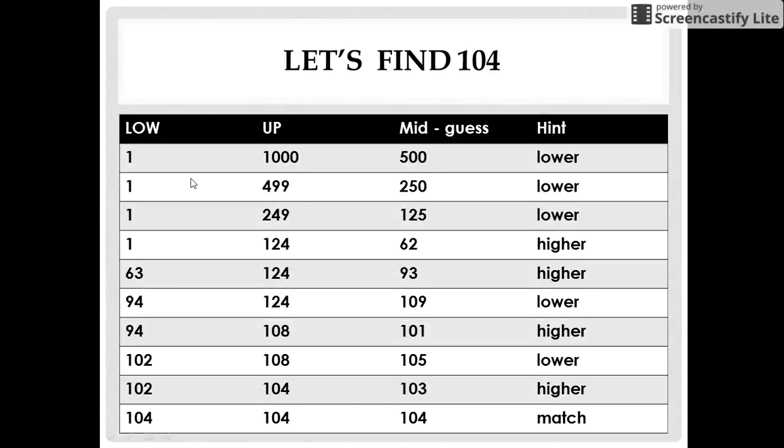We again find the middle of 1 and 499 that is 250 and guess it for the second time. We again get the hint as lower. We again change our upper limit to 250 minus 1 that is 249 and the process is repeated till we guess the correct number.